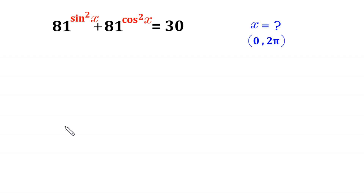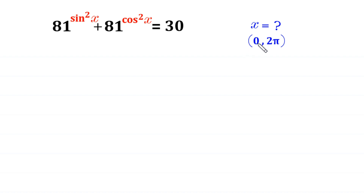Hello, welcome to how to solve this very nice trigonometric equation: 81 to the power sin²x plus 81 to the power cos²x is equal to 30. We need to find all possible values of x.